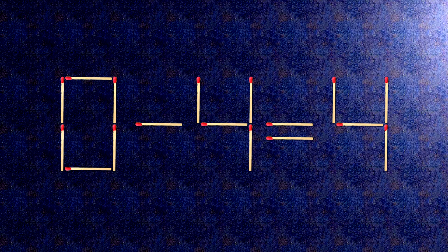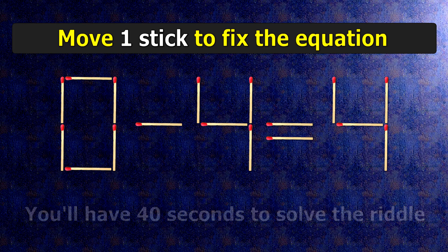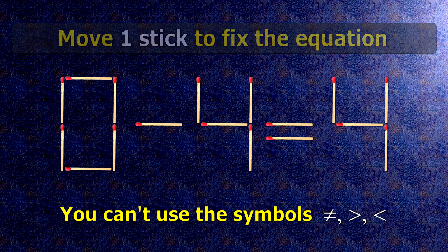We have the equality 0 minus 4 equals 4. Our equality is wrong. We need to move one match to make our equality correct.